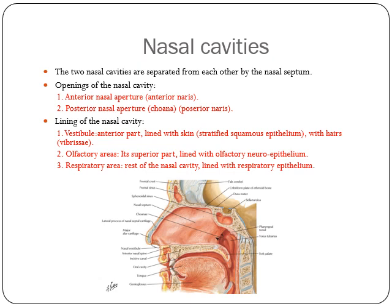The olfactory area in its superior part is lined with olfactory neuroepithelium. The respiratory area — the rest of the nasal cavity — is lined by the respiratory epithelium.